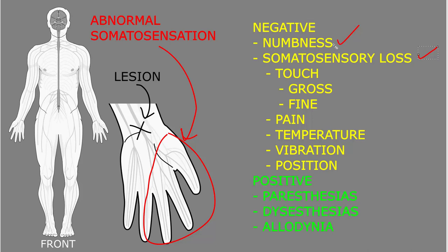Not everyone uses the word 'numbness' the same way, but mostly when someone says they feel numb in an area, it refers to a subjective experience of reduced somatosensation. Dysfunction of peripheral somatosensory axons may also cause other abnormalities. The first of these we call paresthesias — spontaneous or evoked positive somatosensory symptoms that are not unpleasant. The most common example is a tingling or mild pins-and-needles sensation. This can be spontaneous with no stimulus applied, and in medical terminology that is called paresthesias.